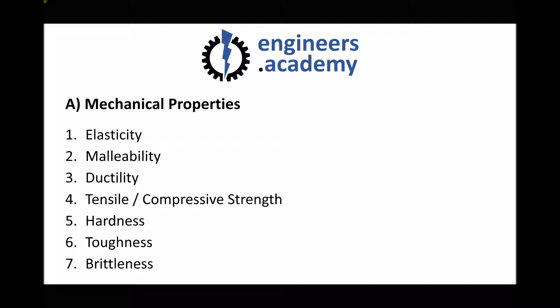Finally we have toughness and brittleness, which are opposites of each other. Toughness also relates to malleability. If we have a piece of tough material and apply an impact force to it, that tough material will absorb that impact force.